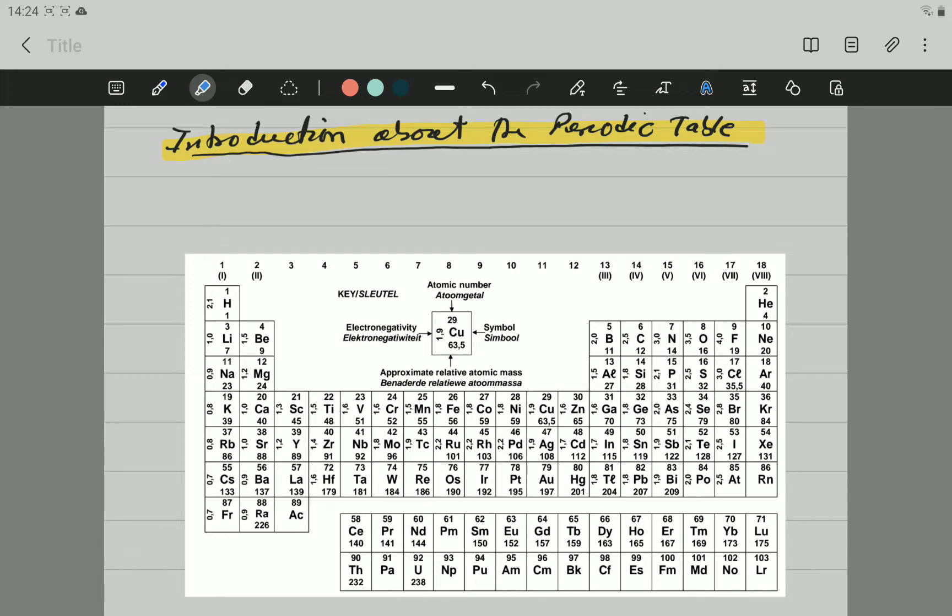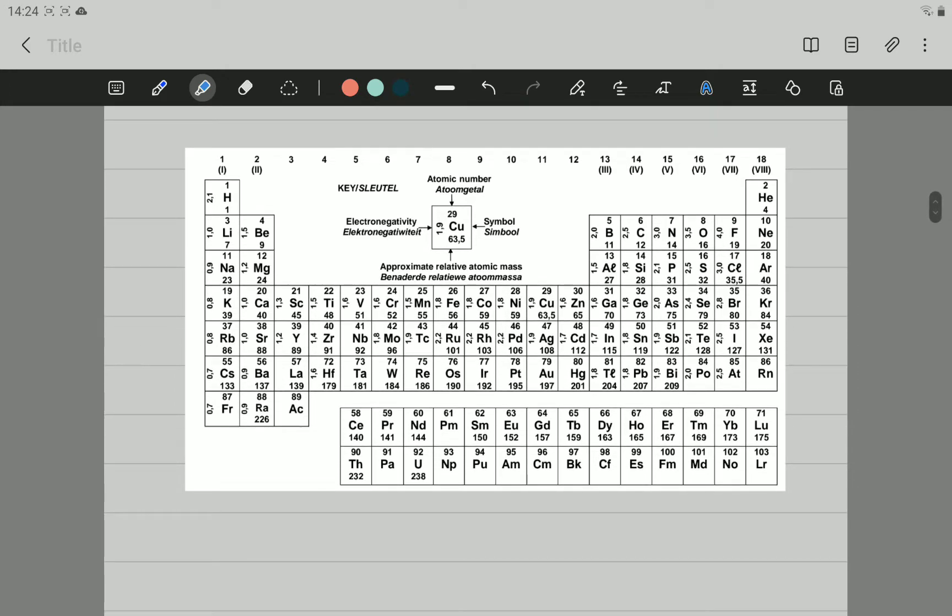we are going to speak about groups and periods. There will be another video later on that will speak about atomic number and atomic mass. But in this one, only groups and periods. So, here we have the Periodic Table. And like all the Periodic Table, you have horizontal rows. These are the horizontal rows there. One, two, there we have horizontal rows.